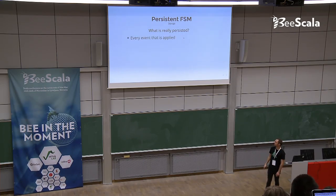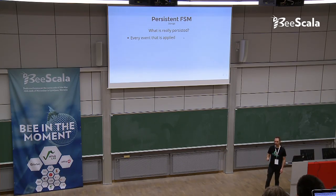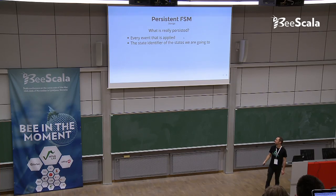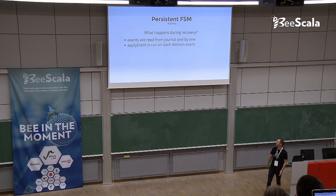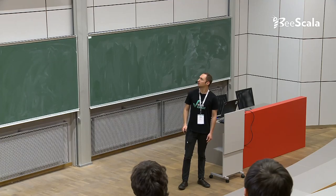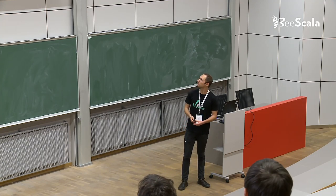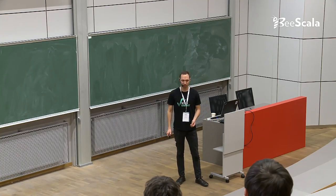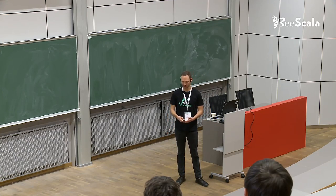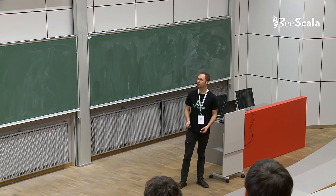What is really persisted? Every single internal event that is applied goes through the applyEvent method, and every state change is also persisted. Both of these go to the journal database. For recovery, every single event is read one by one from the journal, from oldest to newest. If we find a domain event, we apply it via applyEvent. If we find a state change event, we move to that state.